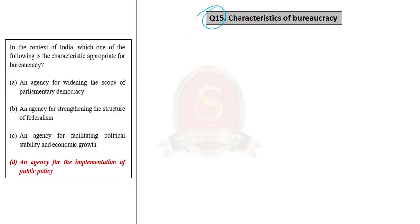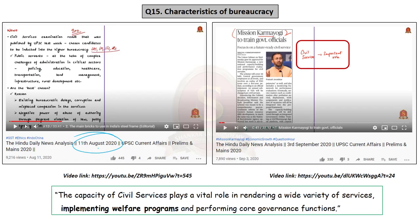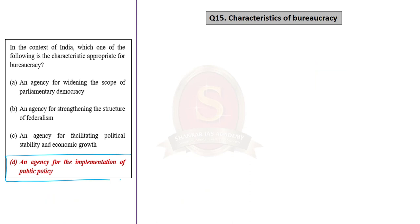The 15th question in Set A asks which characteristic is appropriate for bureaucracy. Civil services in general is called bureaucracy. We discussed higher bureaucracy on 11th August 2020, and on 3rd September 2020 we discussed Mission Karmayogi — the new national architecture for civil services capacity building. On that day, we made a statement sourced from the Press Information Bureau that the capacity of civil services plays a vital role in rendering a wide variety of services, implementing welfare programs and performing core governance functions. With this understanding, we can arrive at the correct answer, which is Option D.